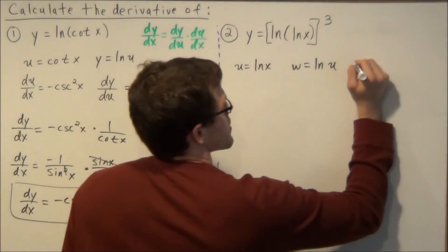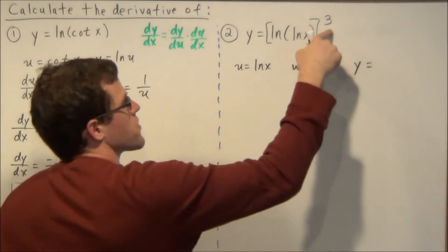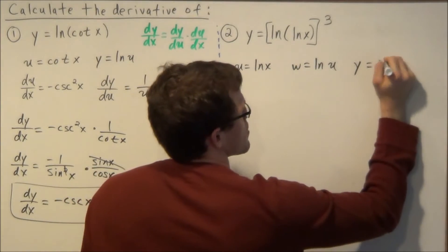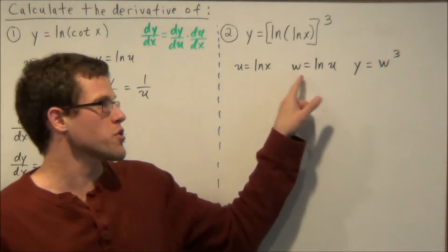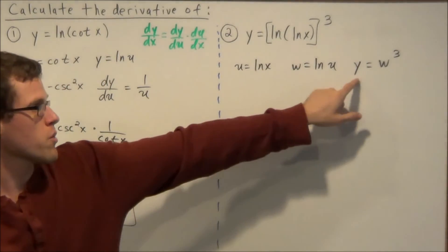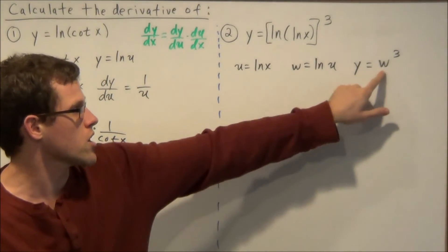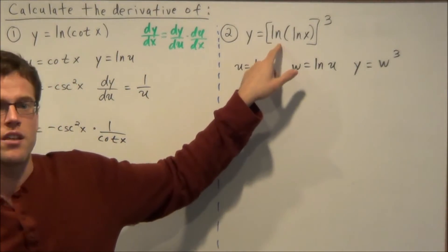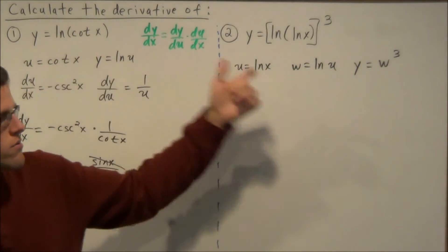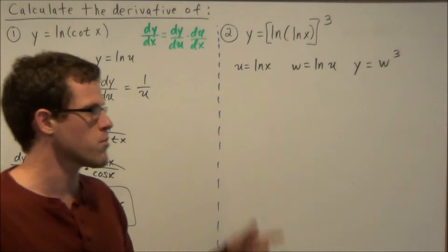And then y, the outermost function is the exponent three, would be w to the third power. So if you're ever unsure if you're doing it correct at this step, you could always plug in w is natural log of u, and then u is natural log of x, and it would bring you back to the original expression. So it's important that you kind of do that either in your head or on the paper before you go forward.